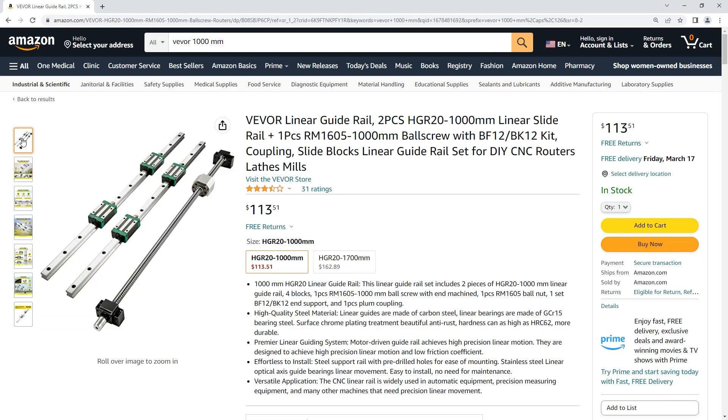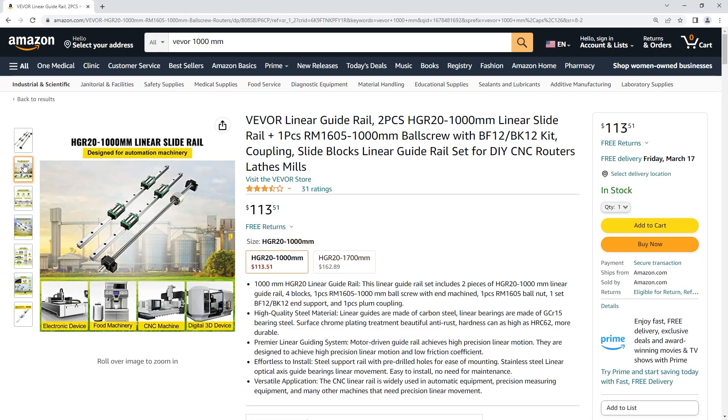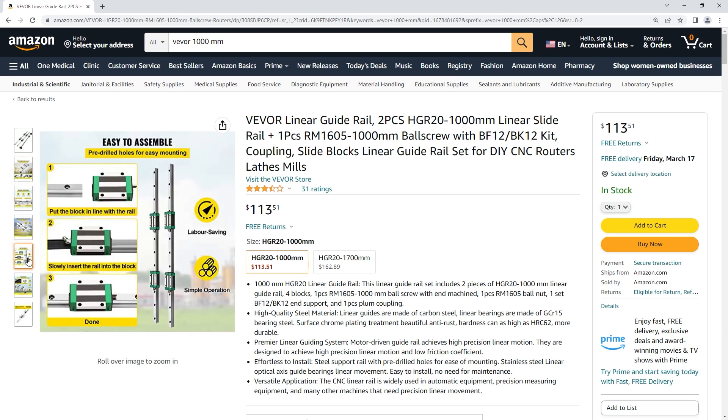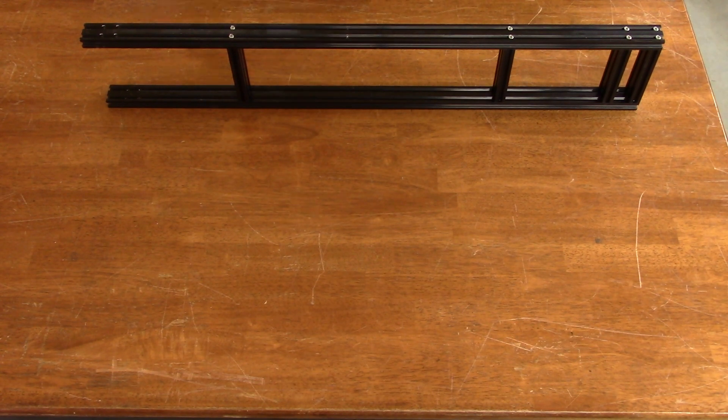The kit I showed from Amazon is the Vibor HGR20 1000mm linear slide with RM1605 bolt screw. As you can see,